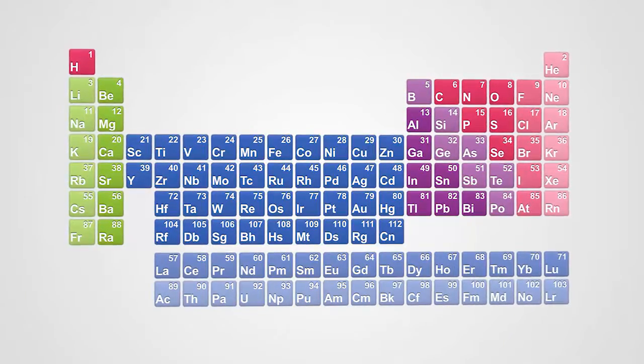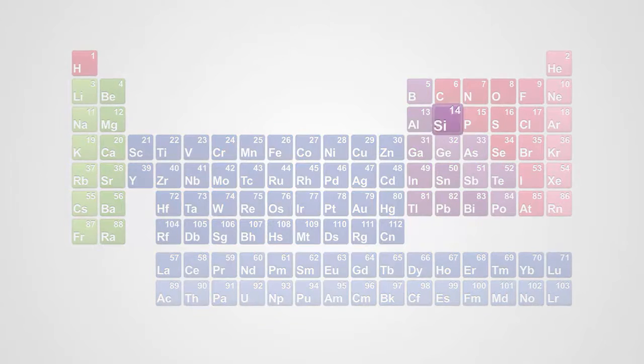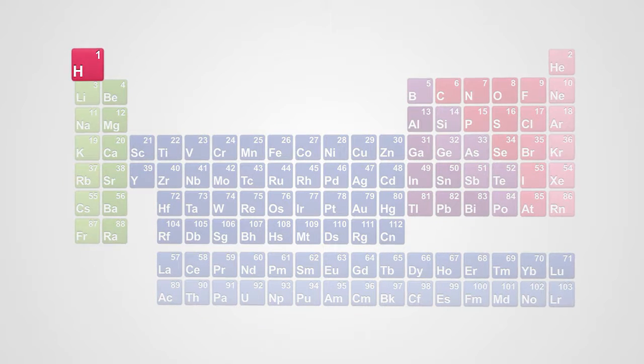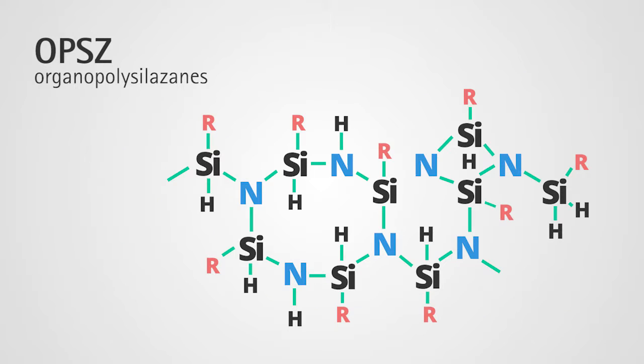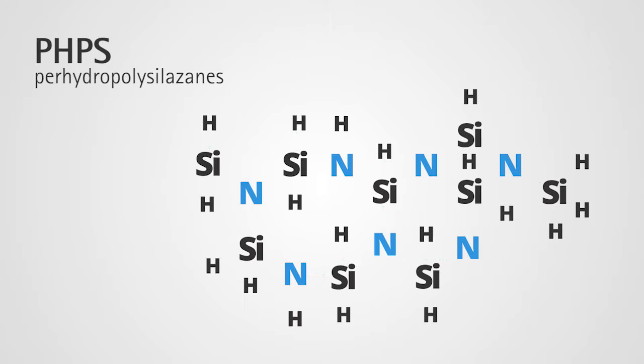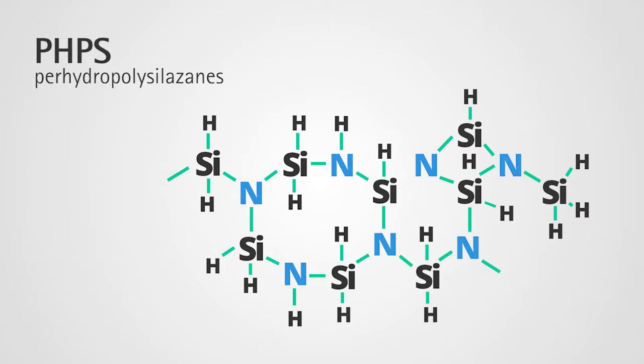Polysilazanes are a new class of polymers consisting of silicon, nitrogen, hydrogen, and in the case of organopolysilazanes, carbon. These polymers are either organic, OPSZ organopolysilazanes, or inorganic, PHPS perhydropolysilazanes, in nature.